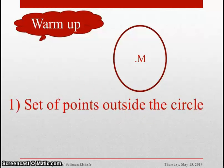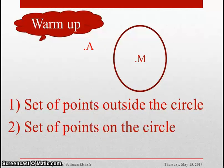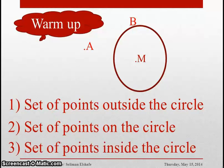Number one: the set of points outside the circle, like point A. Number two: the set of points on the circle, like point B. Number three: the set of points inside the circle, like point C and M.